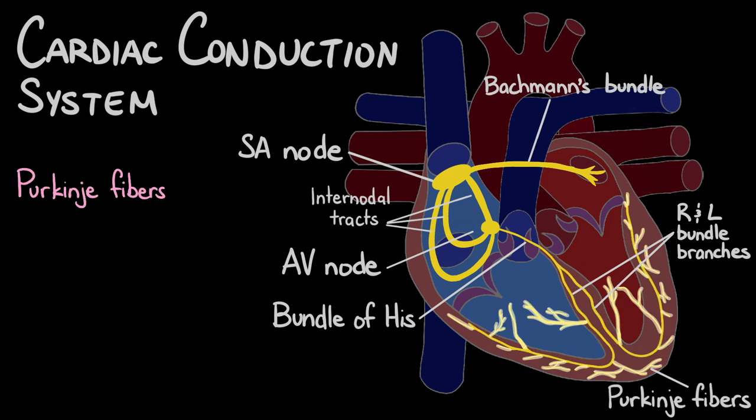The Purkinje fibers extend throughout the ventricles and quickly send the action potential to stimulate the ventricular muscle cells to contract, which pumps blood out of the heart and into circulation.